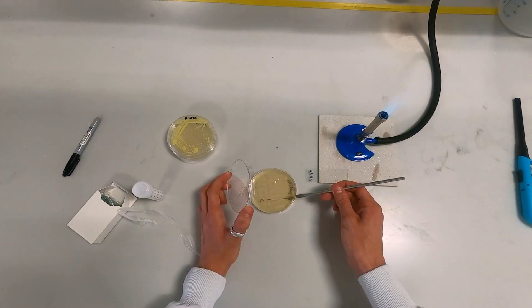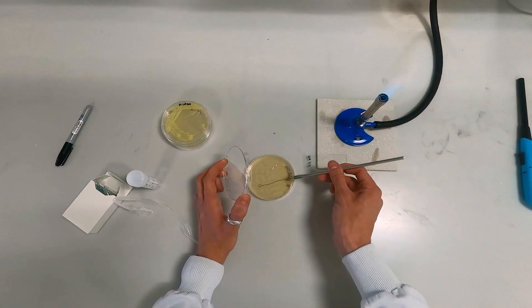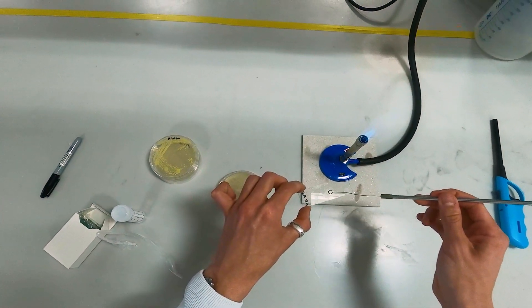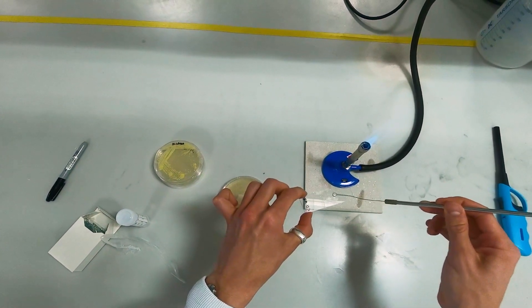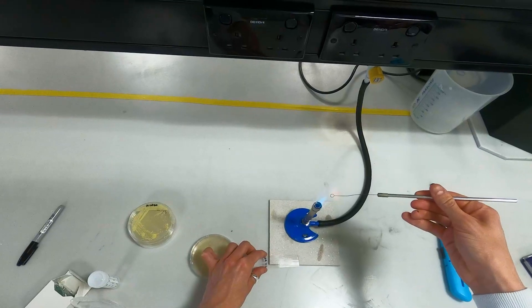Then when you're ready, scrape up a small colony and place it onto your slide. Spread that sample as far and as thin as you can onto the slide and flame your loop before you put it down.